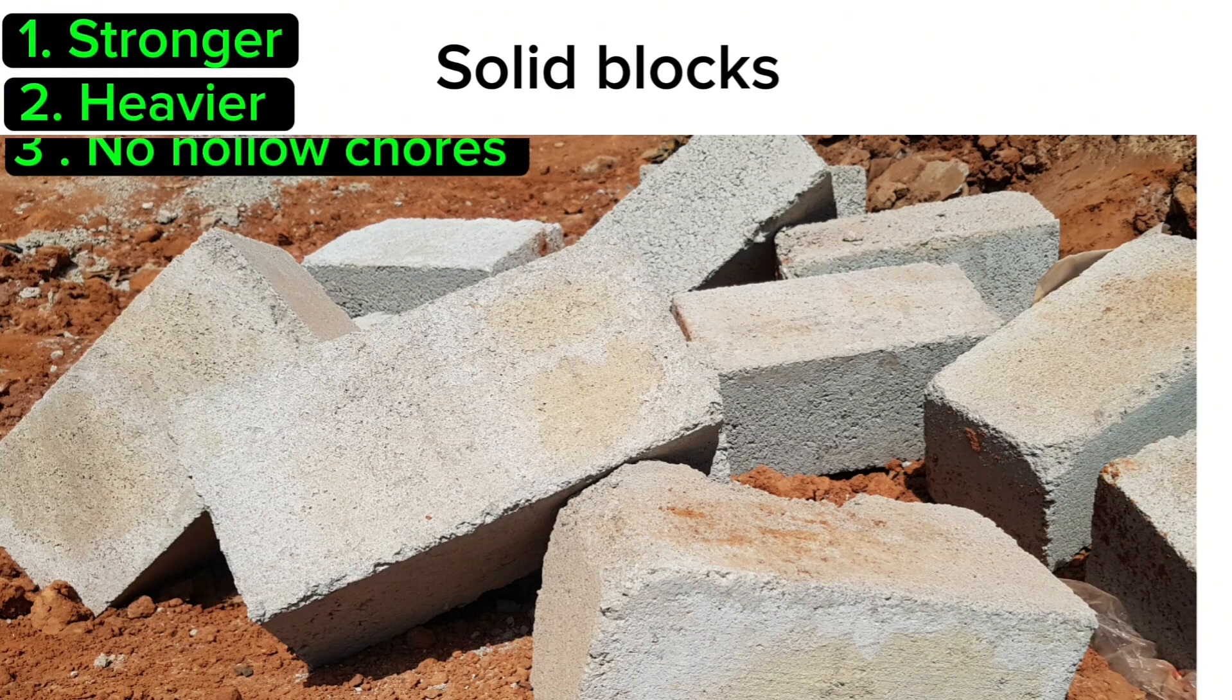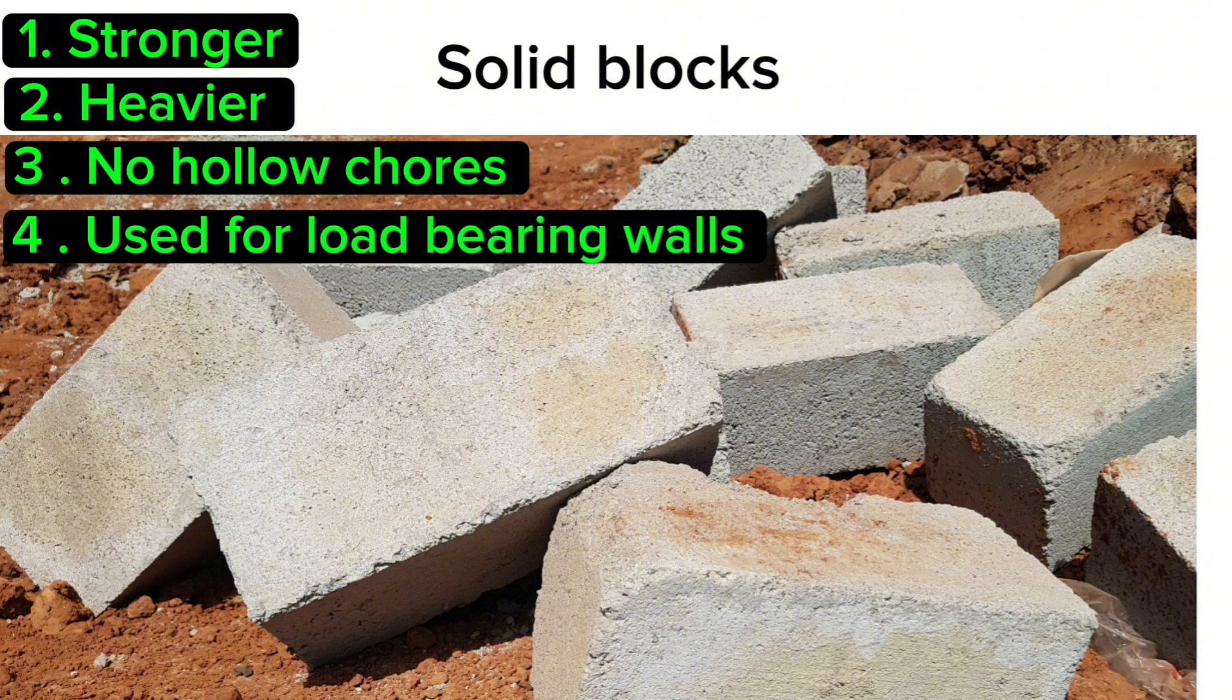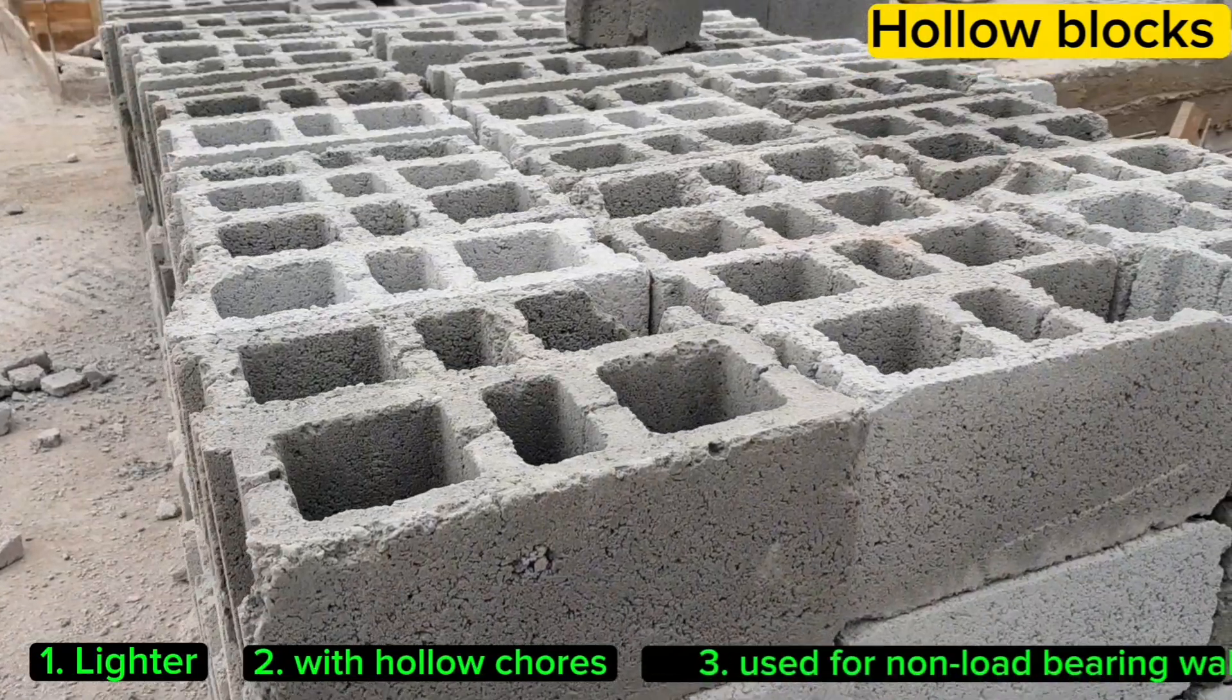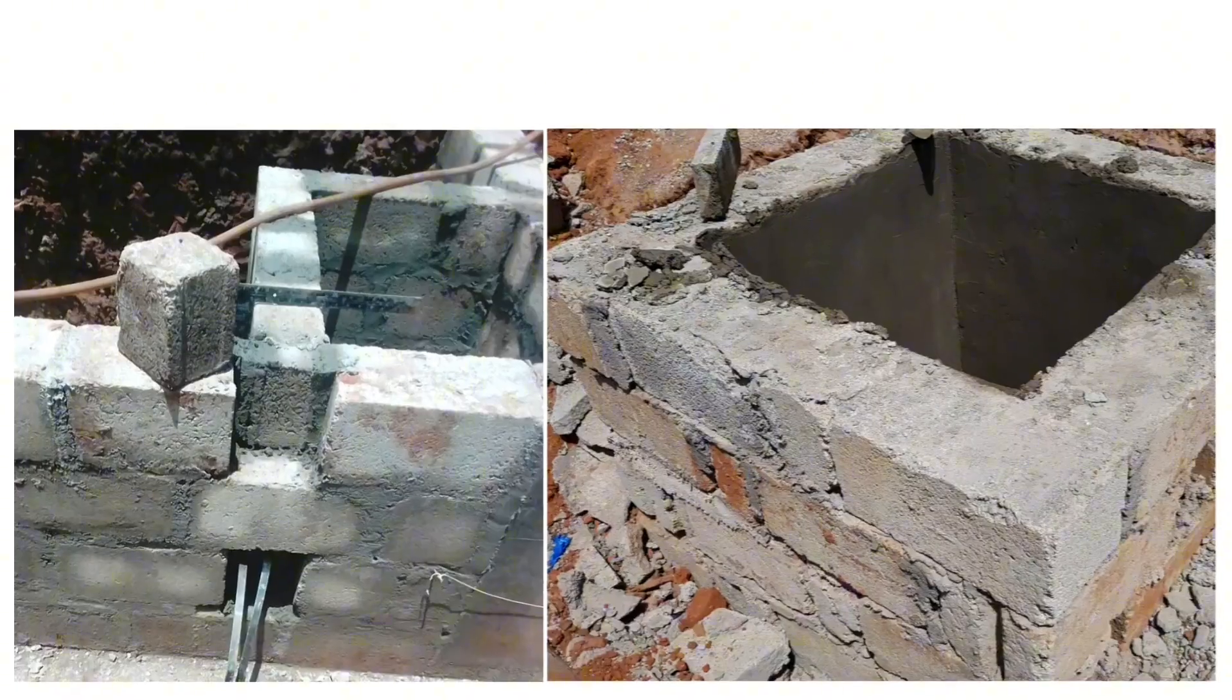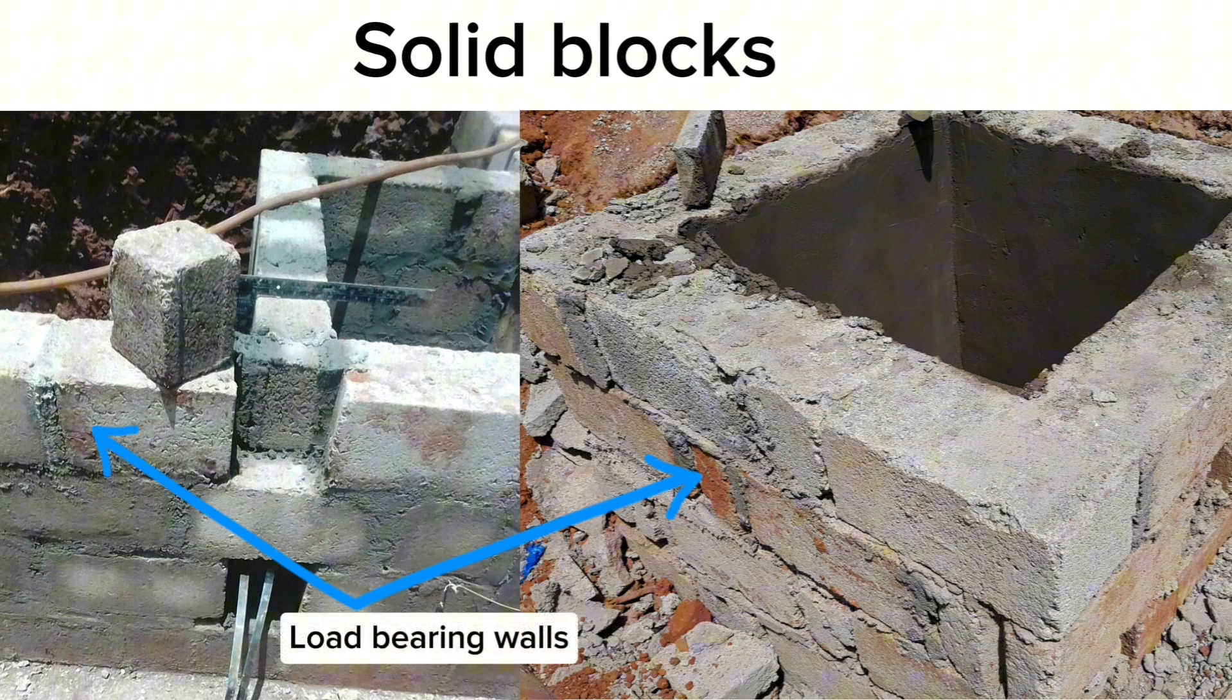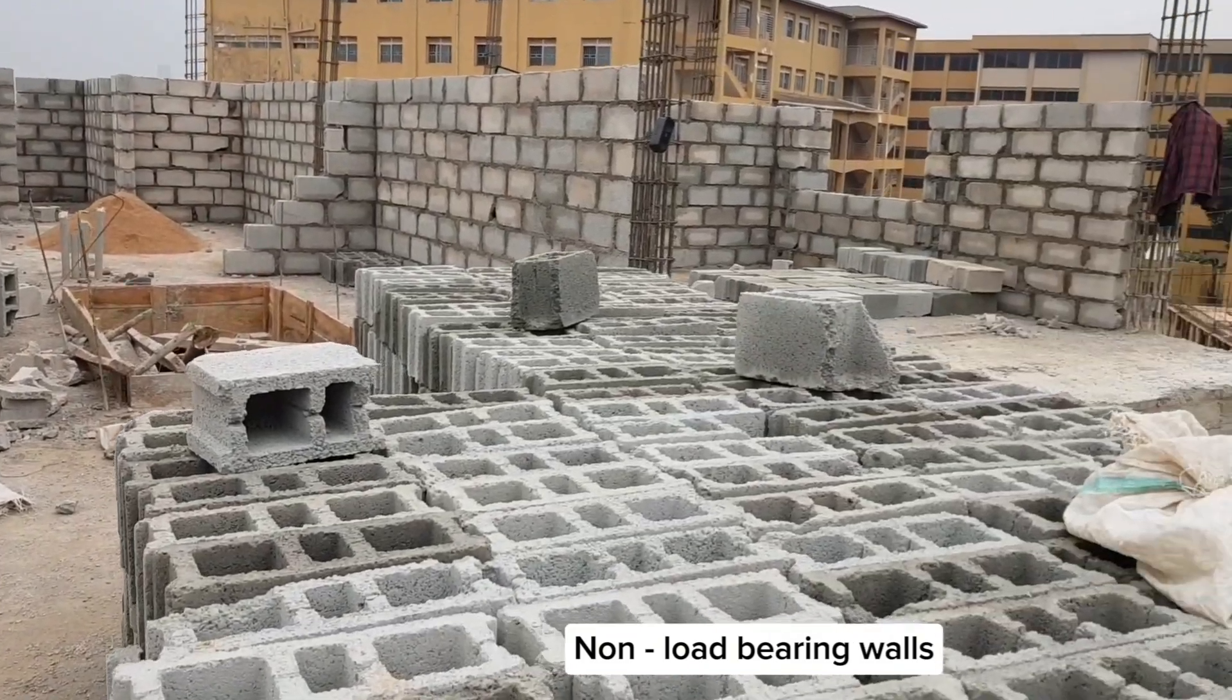a hollow core, used for non-load bearing walls. For example, solid blocks can be used in the foundation below the ground beam as a load-bearing wall, whereas hollow blocks can be used above the ground such as partition walls separating one room from another, which are non-load bearing walls. This brings us to the question: how many blocks do I